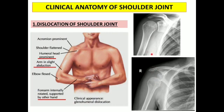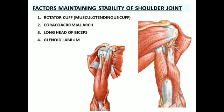These findings are enough to suspect a shoulder joint dislocation. Once you notice these features, you can take an anteroposterior radiograph of the shoulder, which will be sufficient to confirm the diagnosis by comparing the normal and dislocated radiographs.